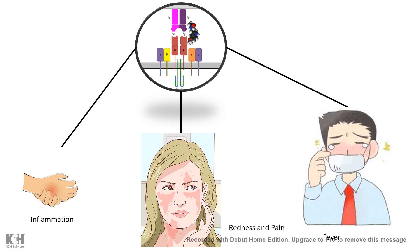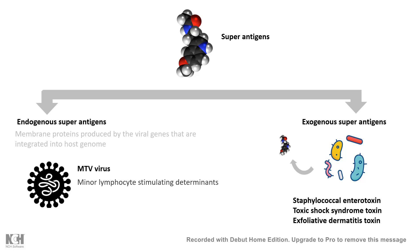Superantigens are roughly categorized into two categories: exogenous and endogenous. Exogenous superantigens are mostly bacterial exotoxins, such as staphylococcal enterotoxins, toxic shock syndrome toxin produced by Staphylococcus aureus, and various dermatitis toxins. Endogenous superantigens are membrane proteins encoded by viral genes — specifically retroviral genes that have been integrated into the host genome at some point.